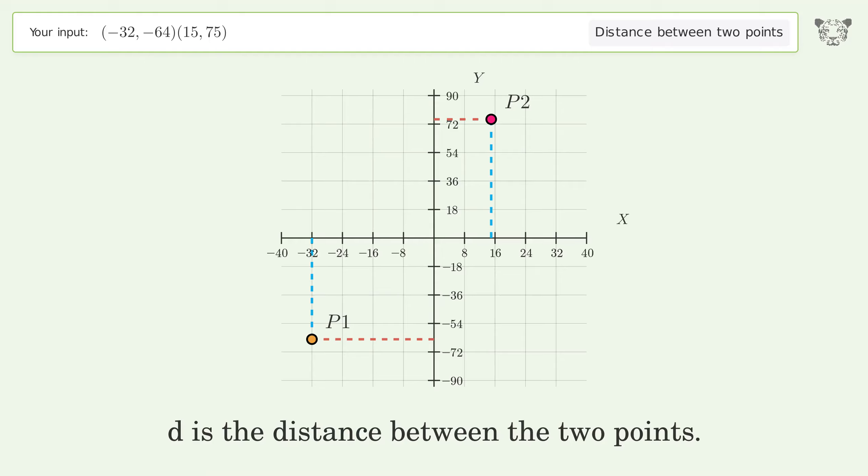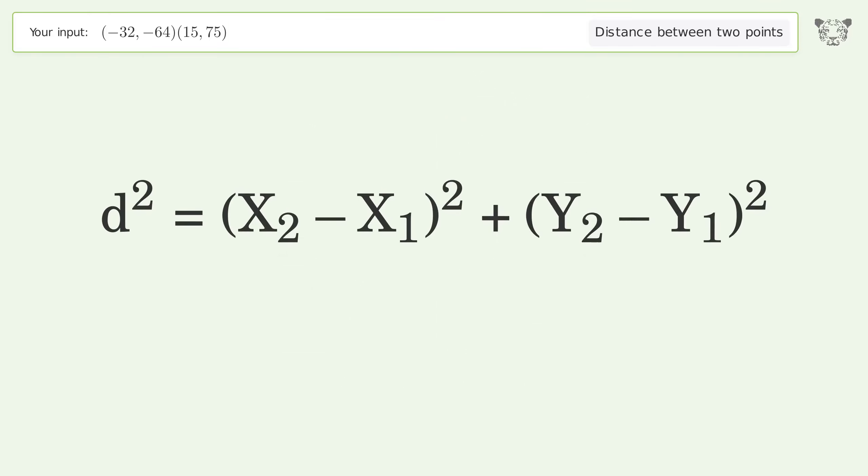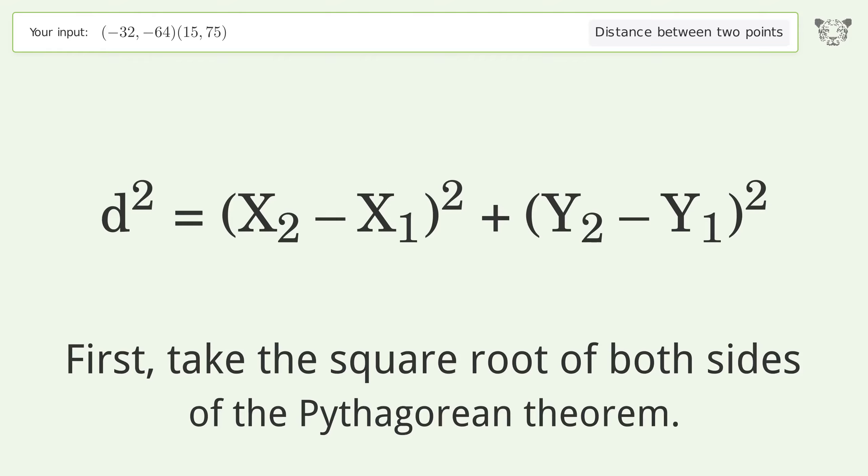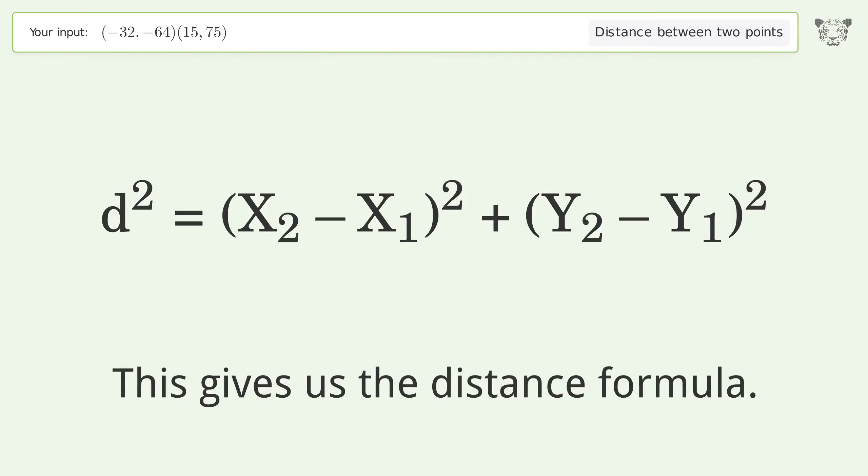d is the distance between the two points. First, take the square root of both sides of the Pythagorean theorem. This gives us the distance formula.